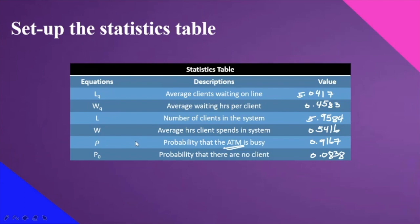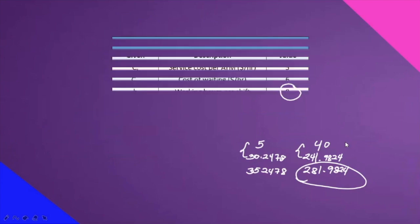The probability that the ATM is busy is 0.92, and the probability that there are no clients is 0.08. As you can see, if you add the probability that the ATM is busy and the probability that there are no clients, it totals to 1 — 100%. That is the statistics table.